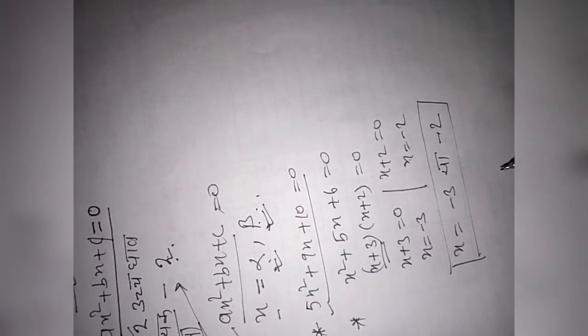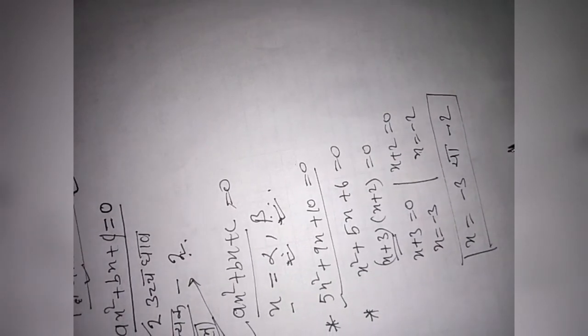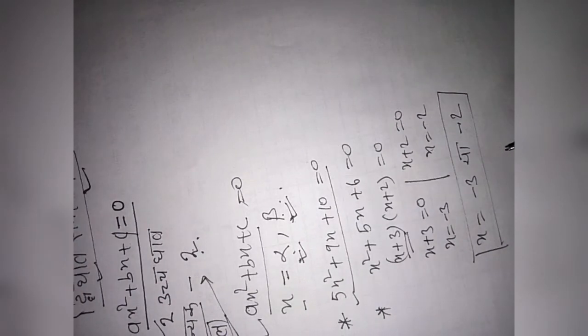If we get the value, then x plus 3 is equal to 0 and x plus 2 is equal to 0. So here is our second bracket, which is the first bracket, and we will go to the next bracket.